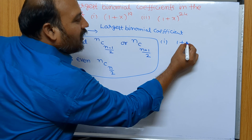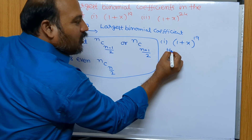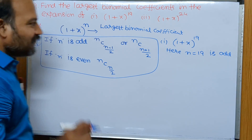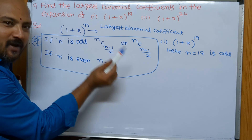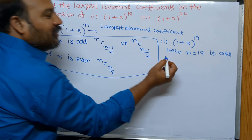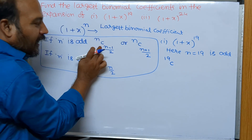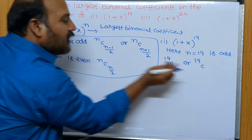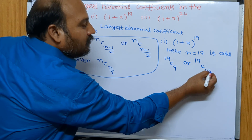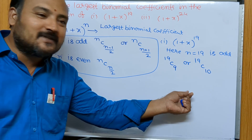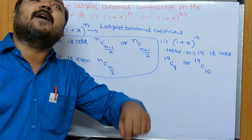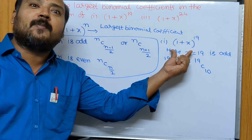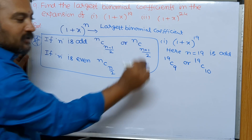In question number one, the expansion is (1+x)^19, so n = 19 which is odd. When n is odd, the largest binomial coefficients are nC(n-1)/2 and nC(n+1)/2, that is 19C9 or 19C10. We know both values are the same because nCr = nC(n-r). So this is the largest binomial coefficient in the expansion of (1+x)^19.